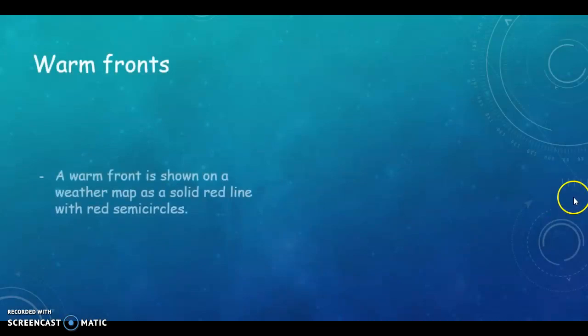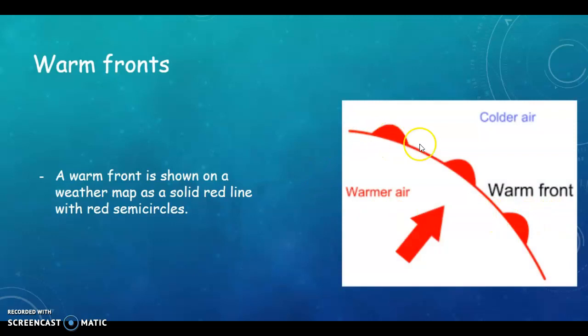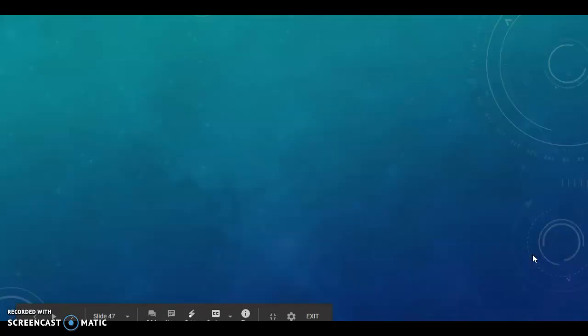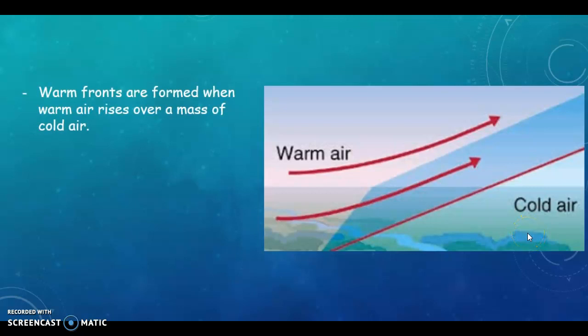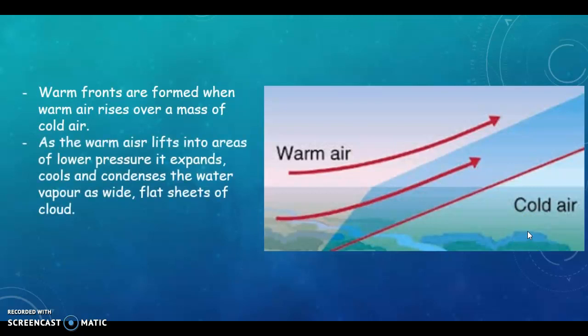So first of all, our warm fronts. So it's shown on the map as a solid red line with red semicircles. So if you see that, if you're asked what that is, that is a warm front. And as you can see here, you have warmer air moving in over colder air. And this is your diagram showing what happens at a warm front. Your warm air comes in and warm air rises over the cold air. So warm fronts are formed when warm air rises over a mass of cold air. As warm air rises, it lifts into areas of lower pressure and it expands, it cools and it condenses.